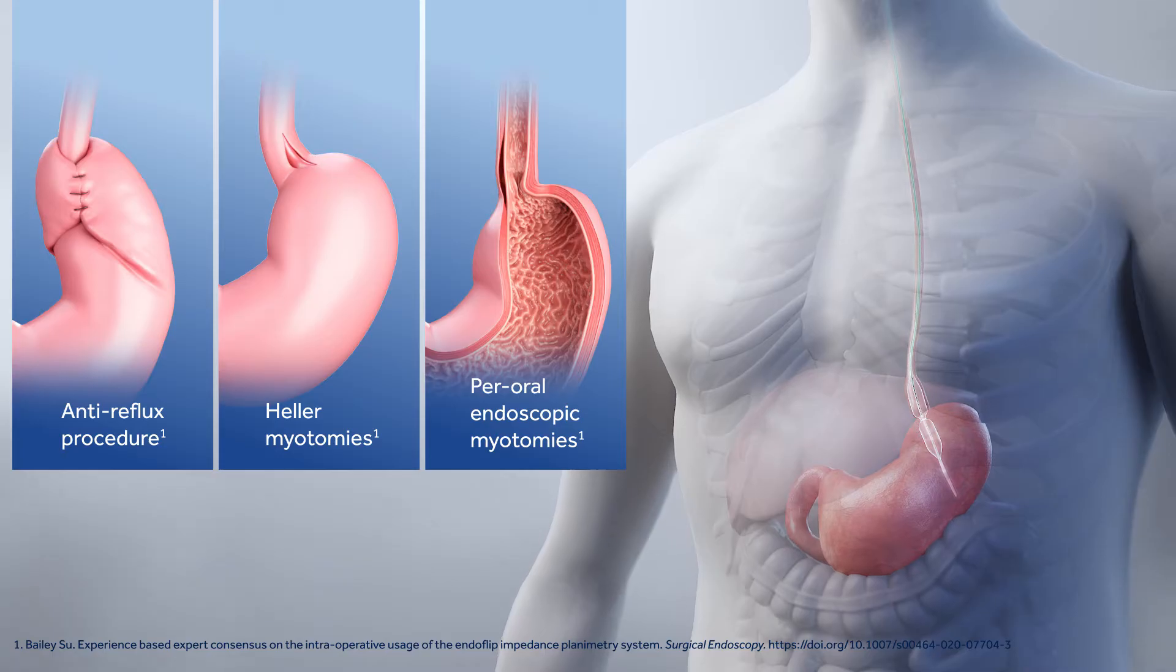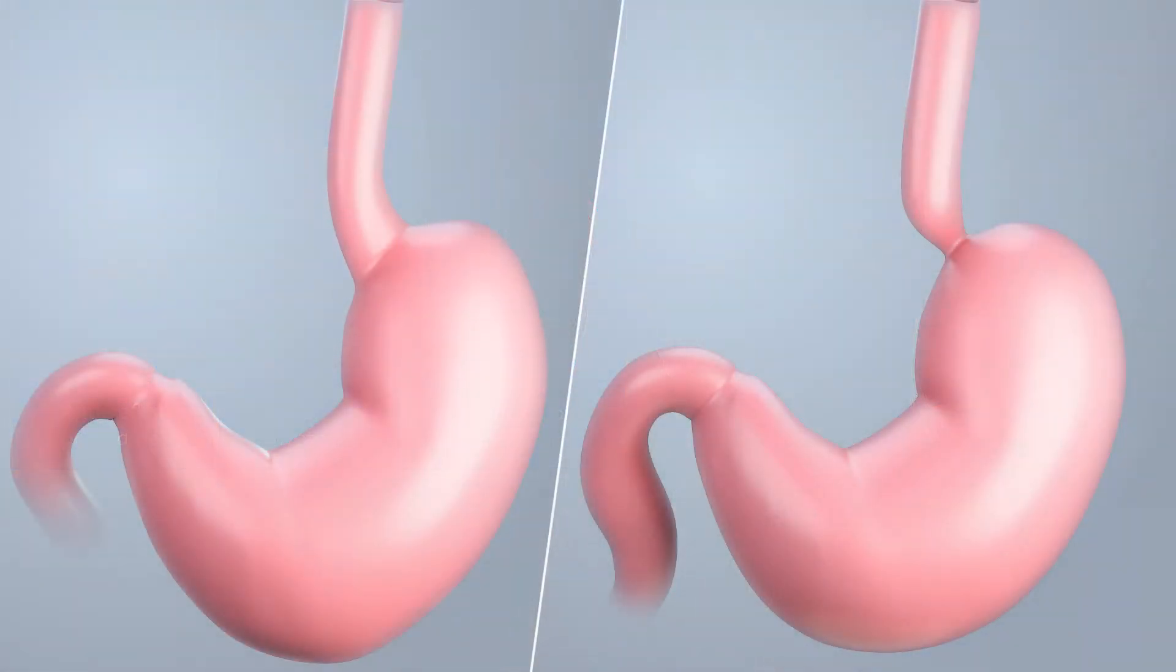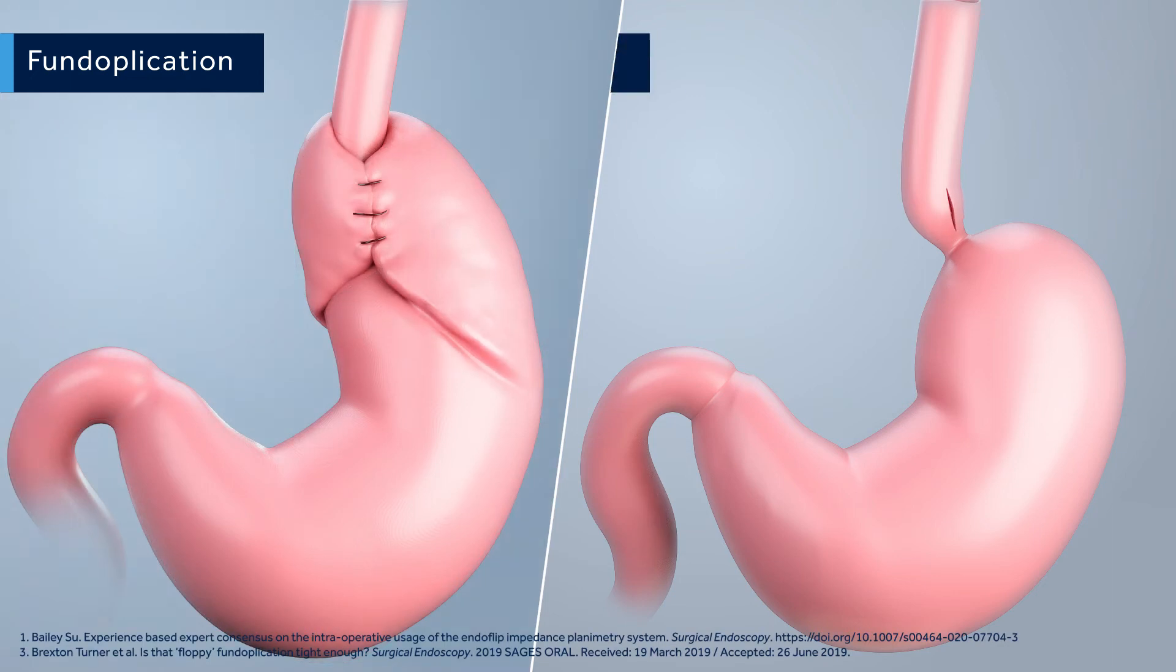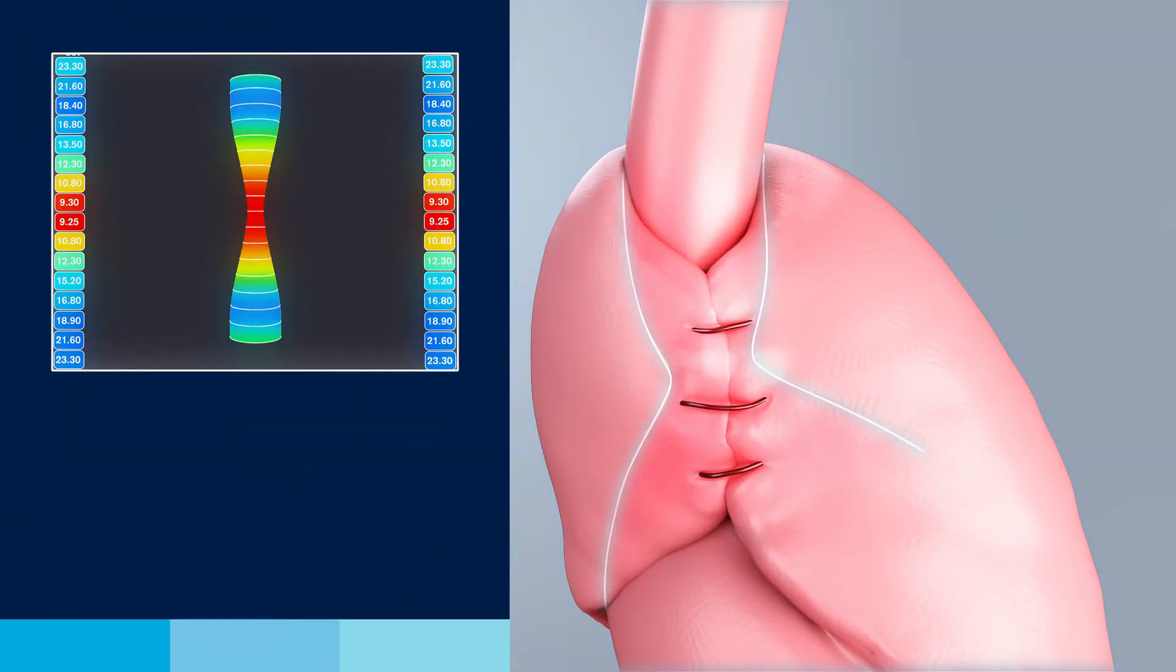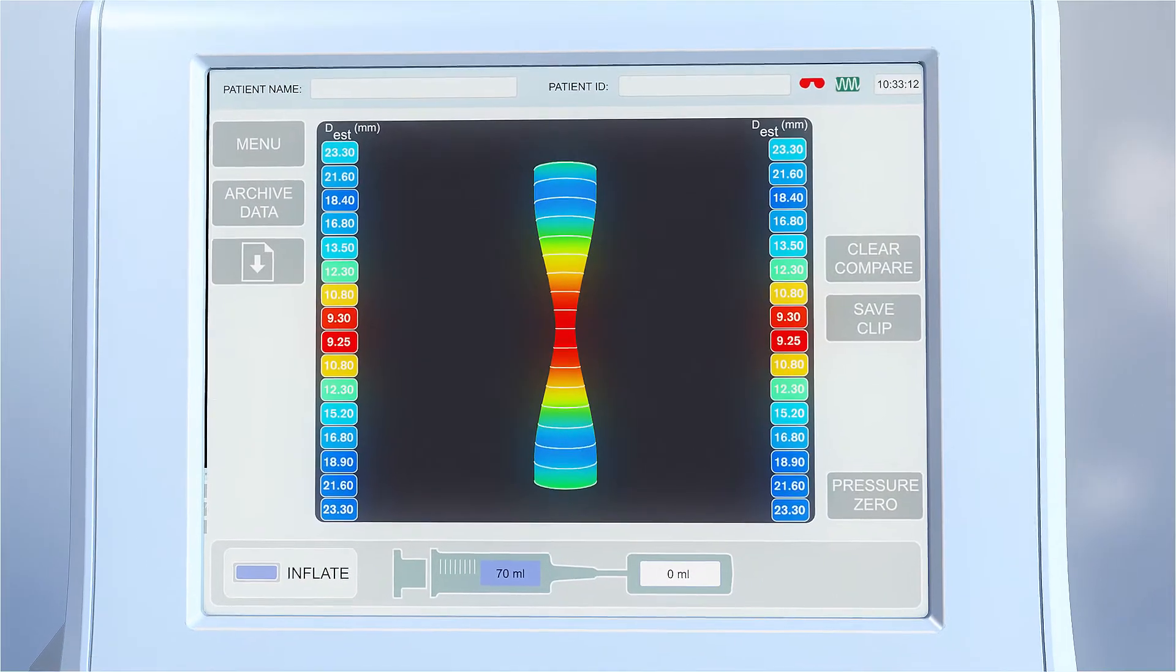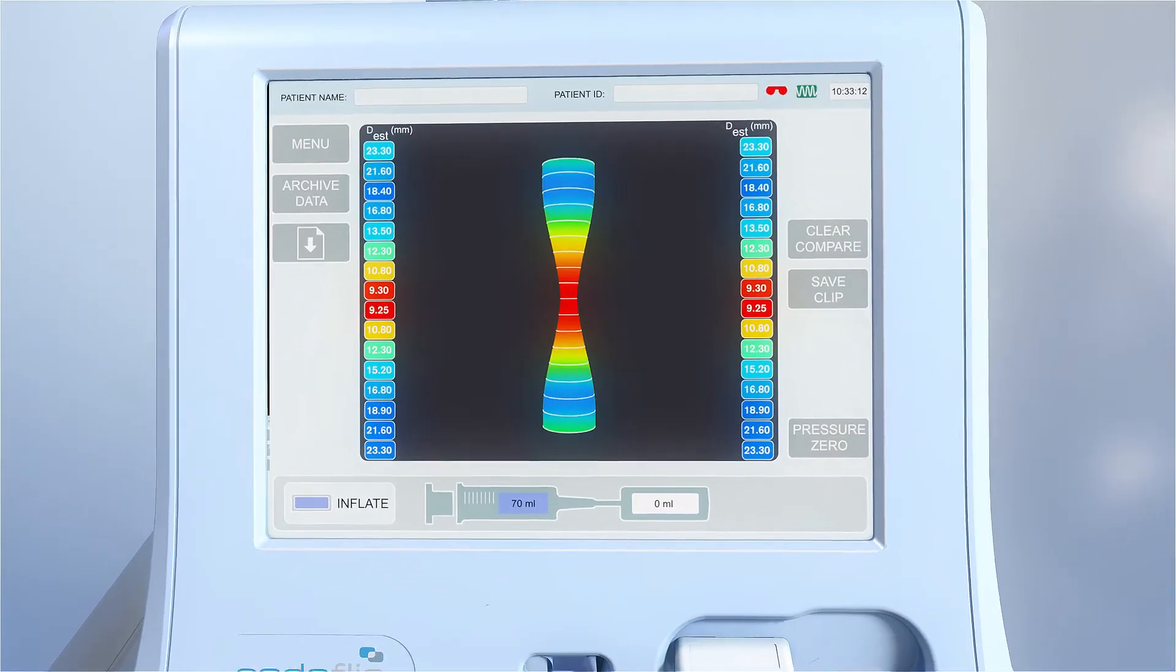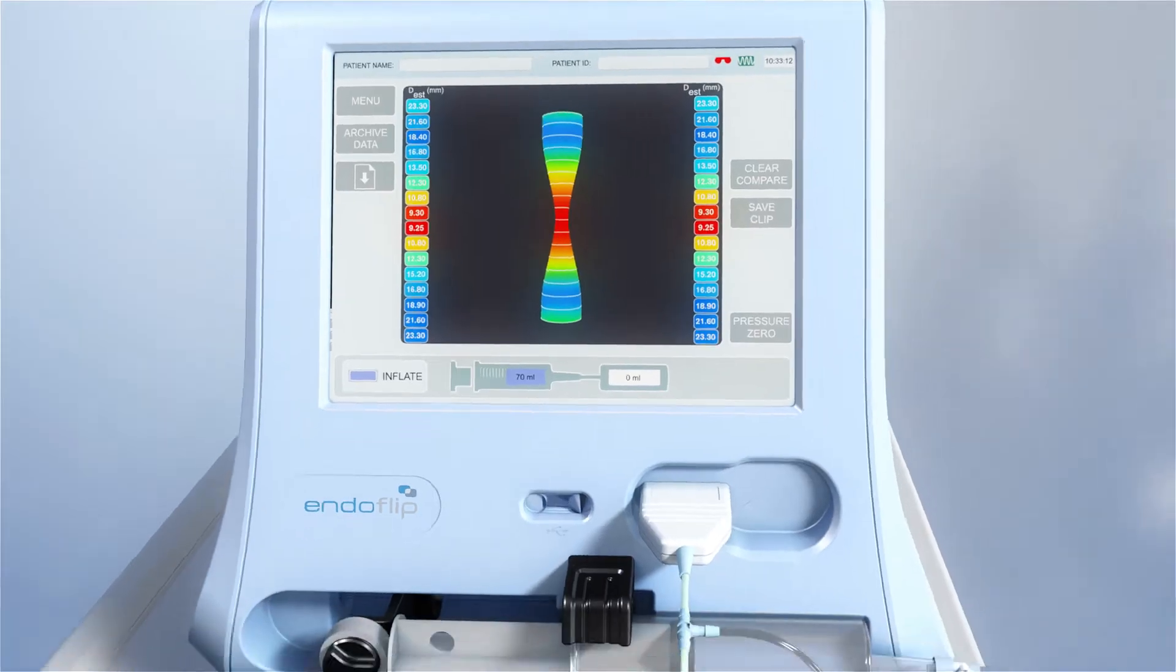During an operation, the tightness of a fundoplication or adequacy of a myotomy needs to be carefully assessed. The EndoFLIP impedance planimetry system provides an objective way to determine the tightness of the repair and displays the data visually.